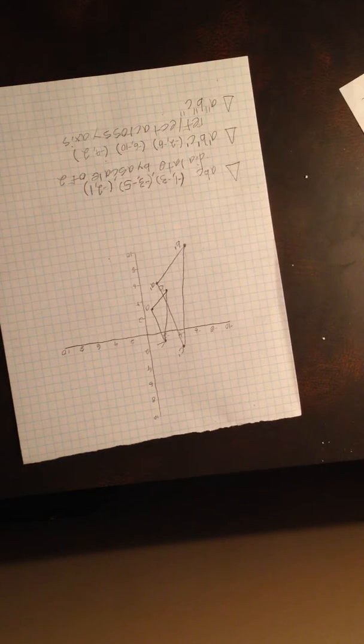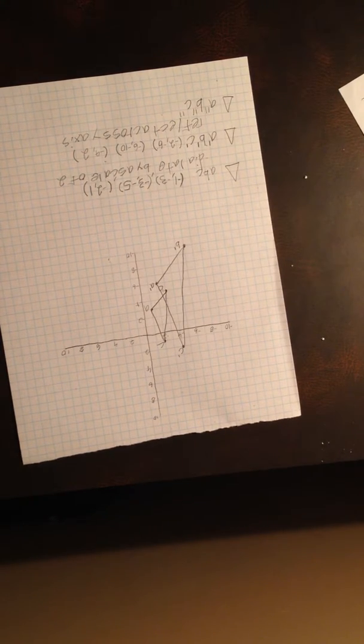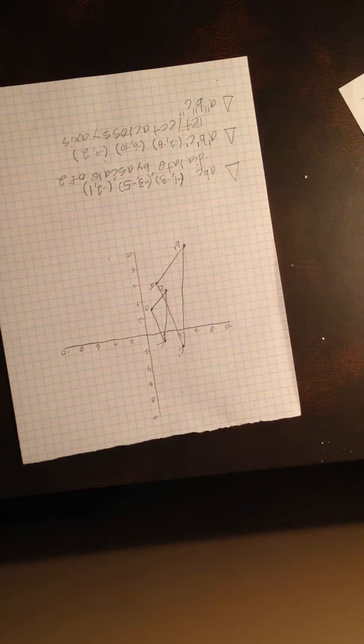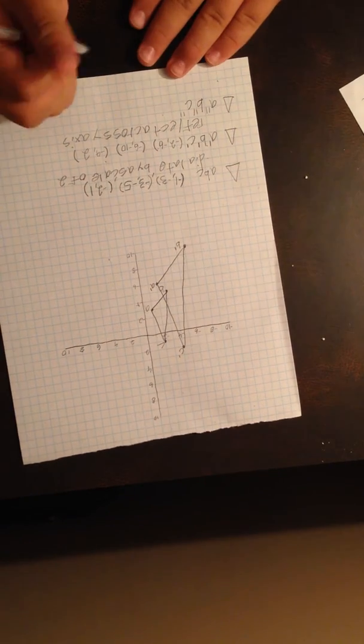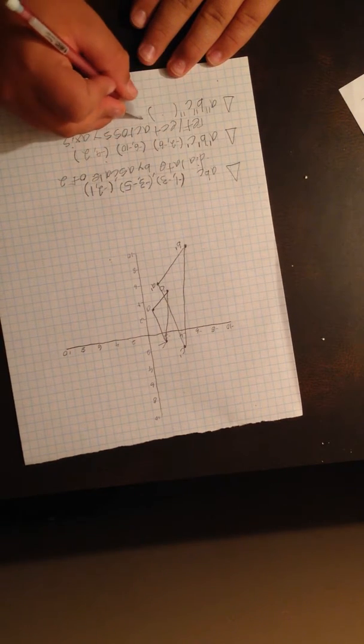So that would be triangle A prime, B prime, C prime, or that would be triangle ABC dilated to a factor of 2. Now we will reflect it across the y-axis.